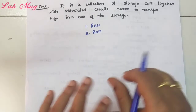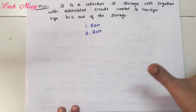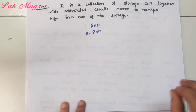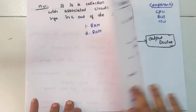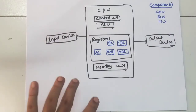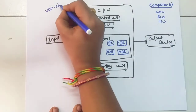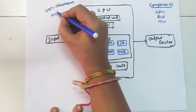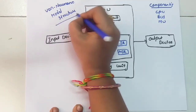This is about the Von Neumann model — a very very important and simple topic. The basic structure may look different at first but it is straightforward. After explaining the stored program control concept, this Von Neumann model explanation follows. This is the main structure of the Von Neumann model. Thank you.